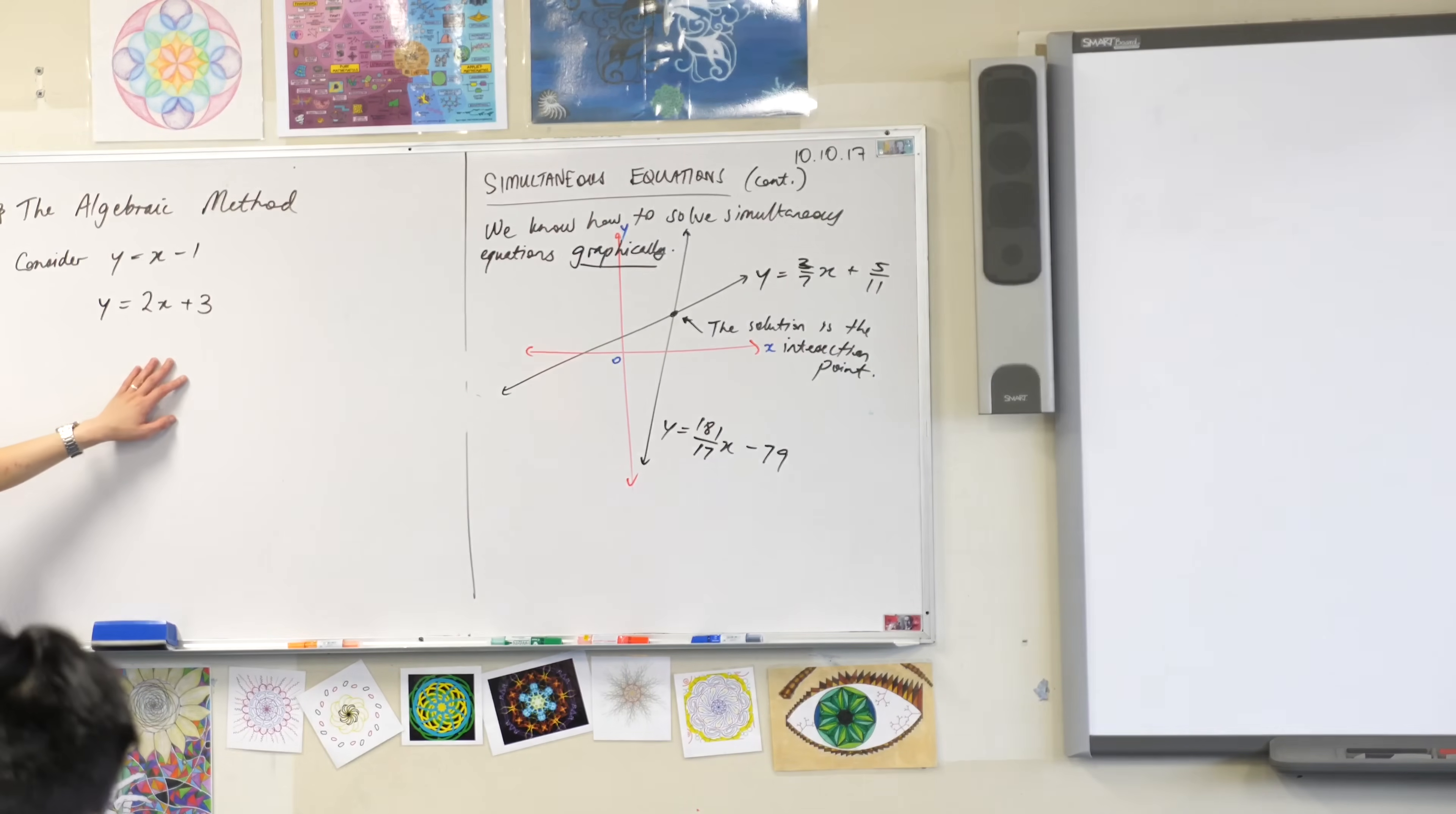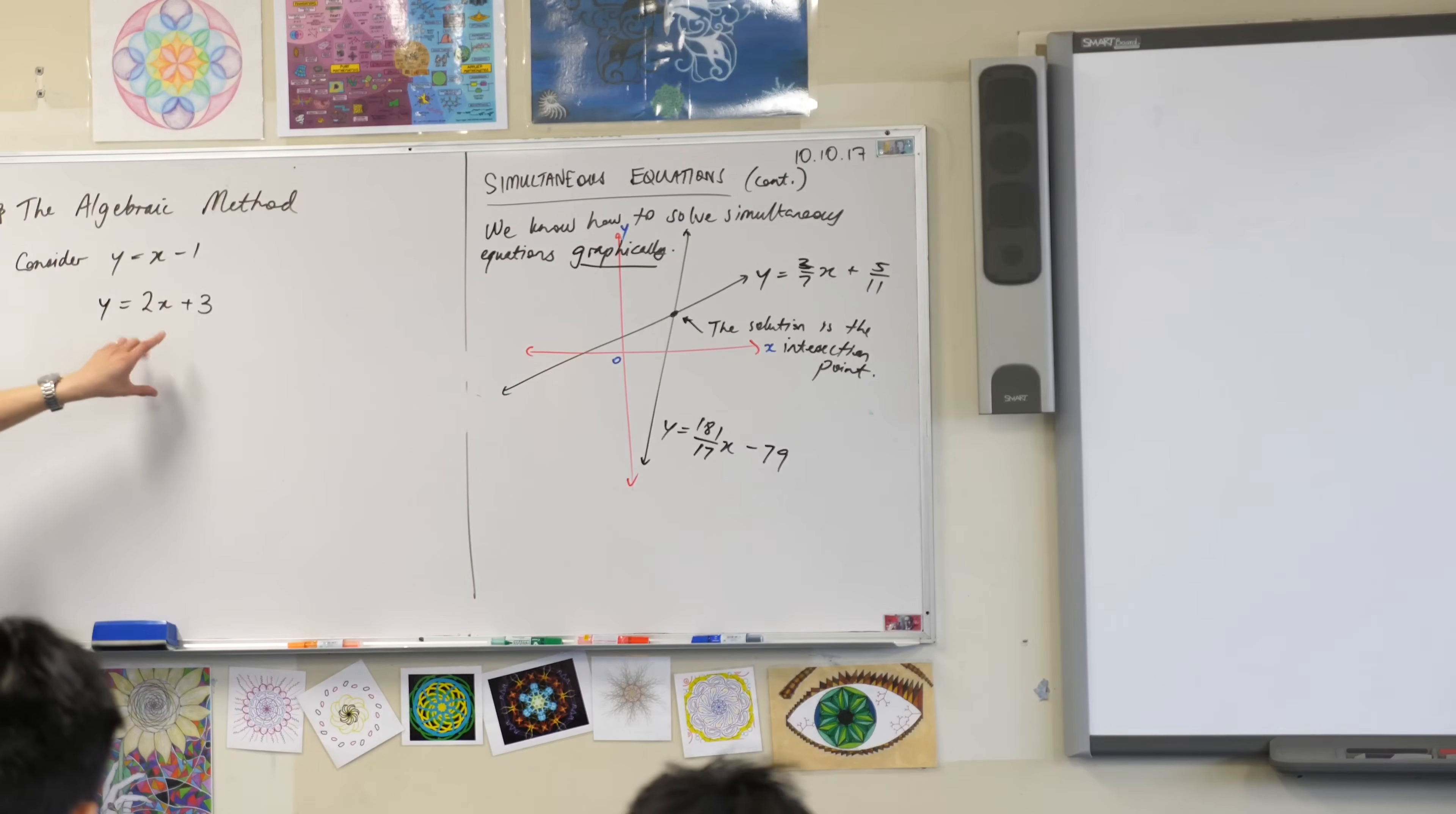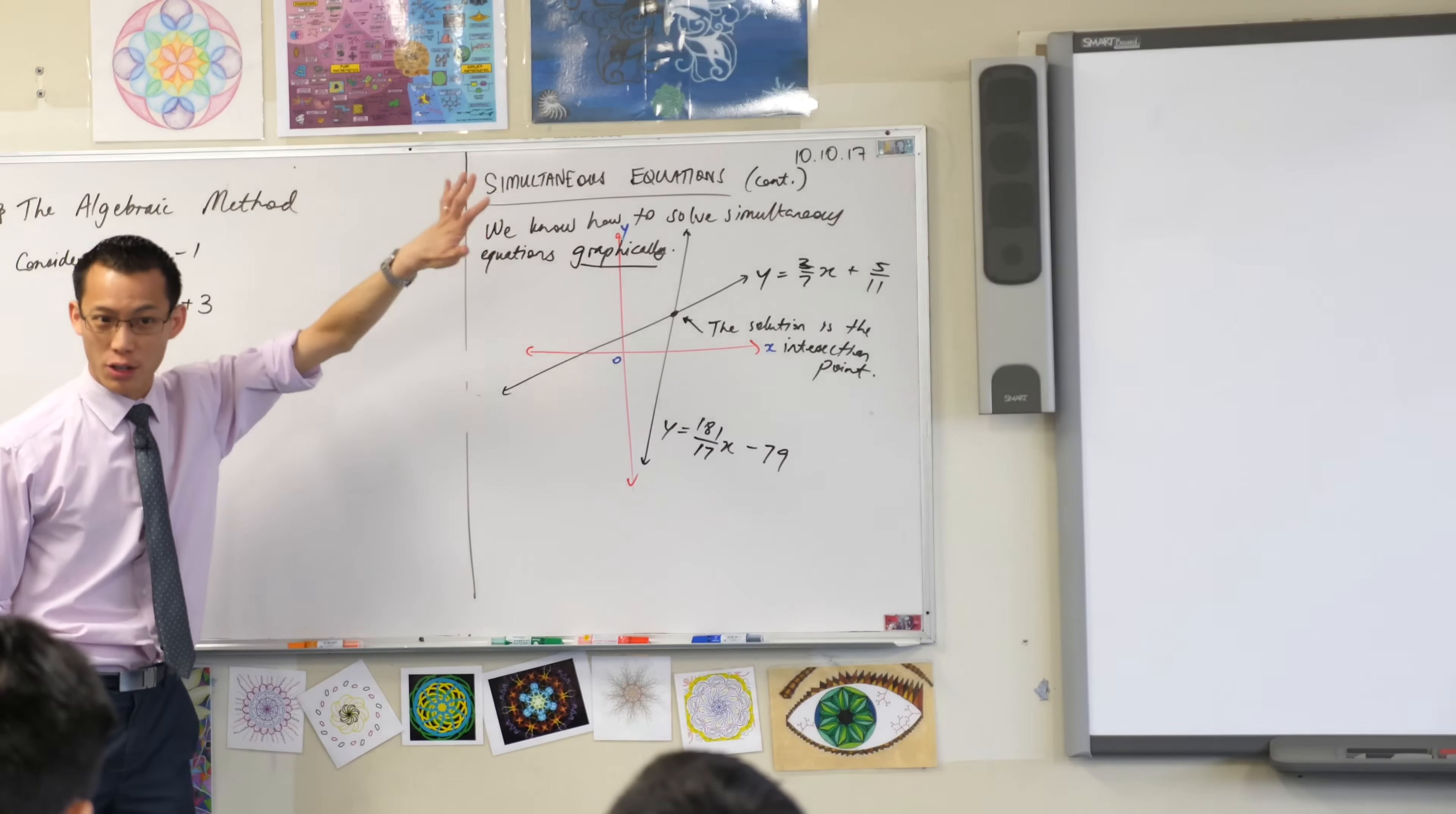Okay, so I said before that the graphical method is lovely when you've got nicely simple numbers but it's just kind of a disaster. It's just completely inadequate if we have these messy numbers here. How can we solve these without ever going anywhere near a graph?